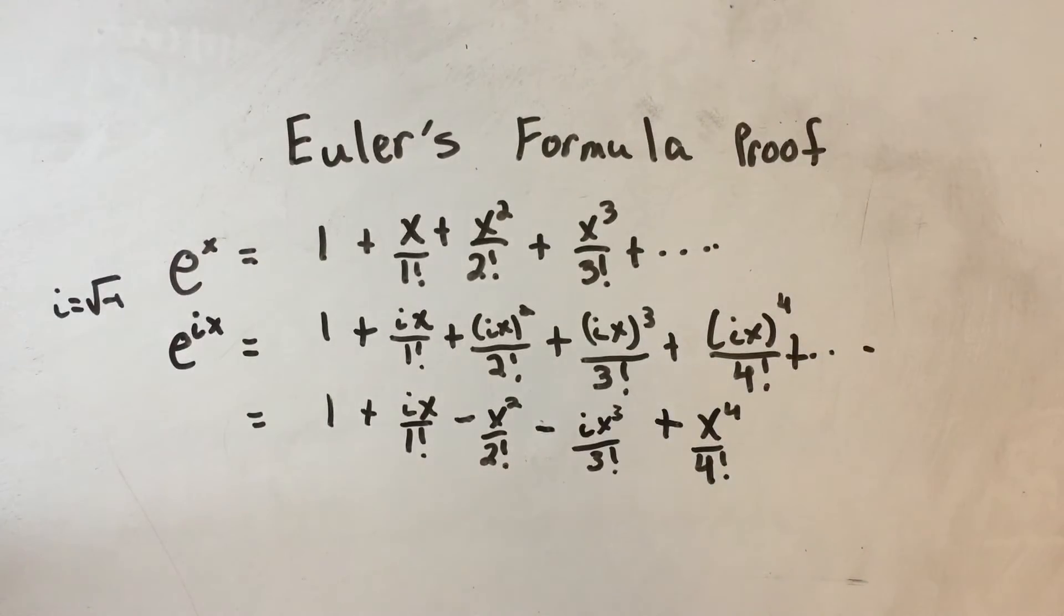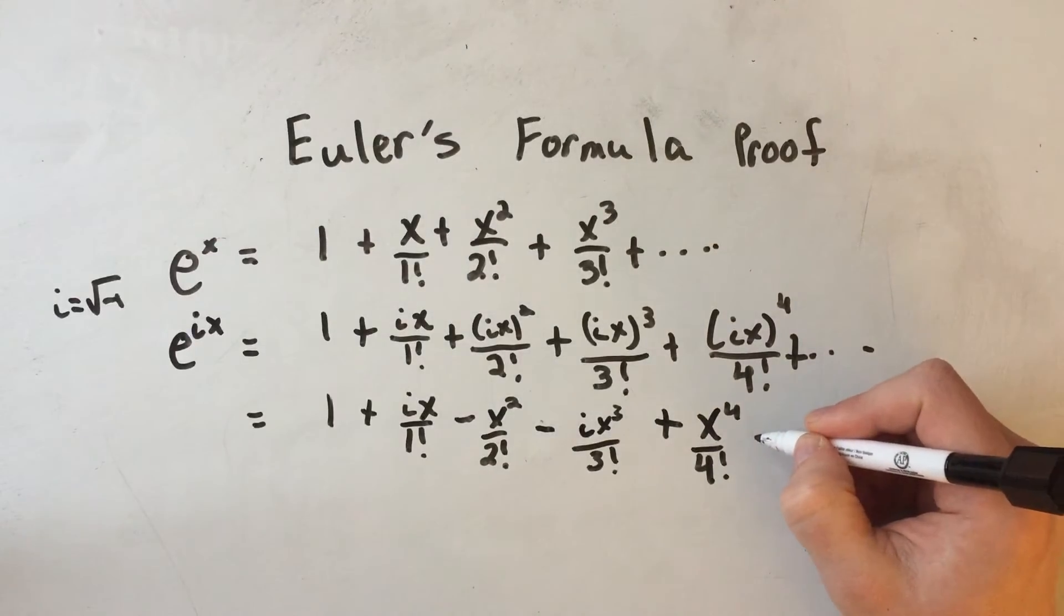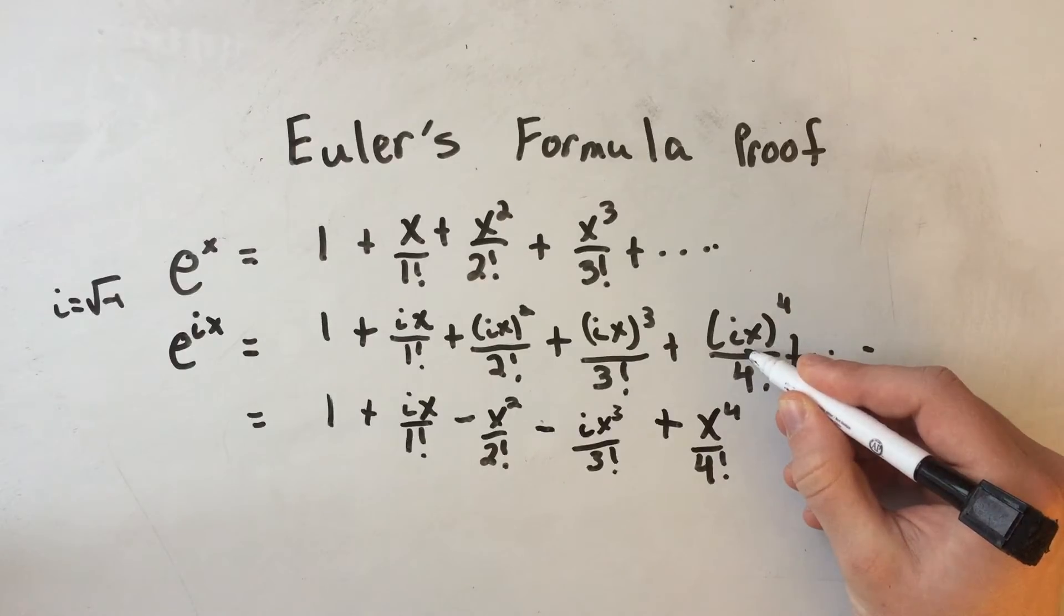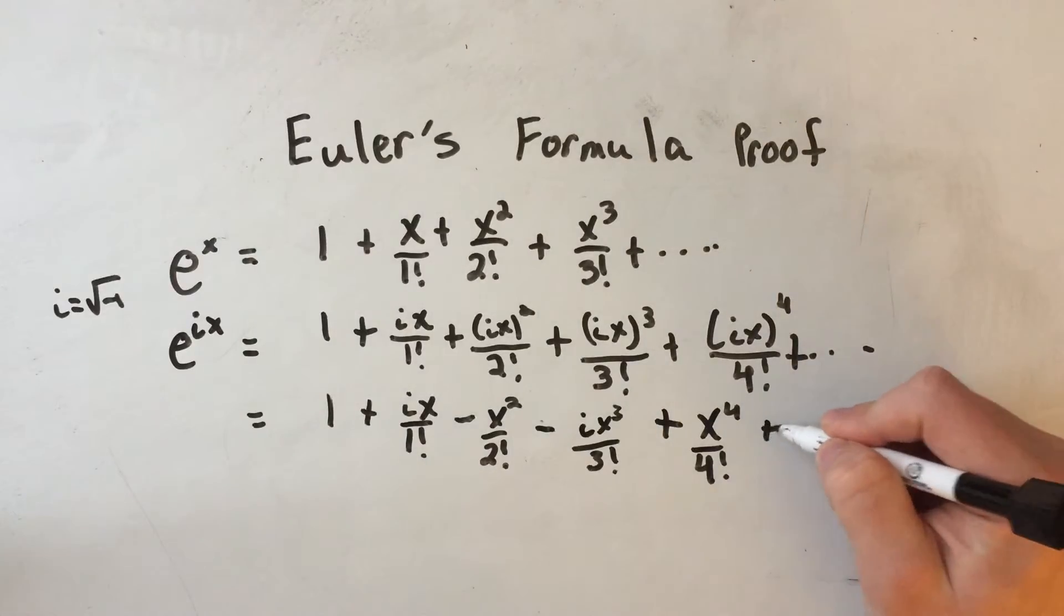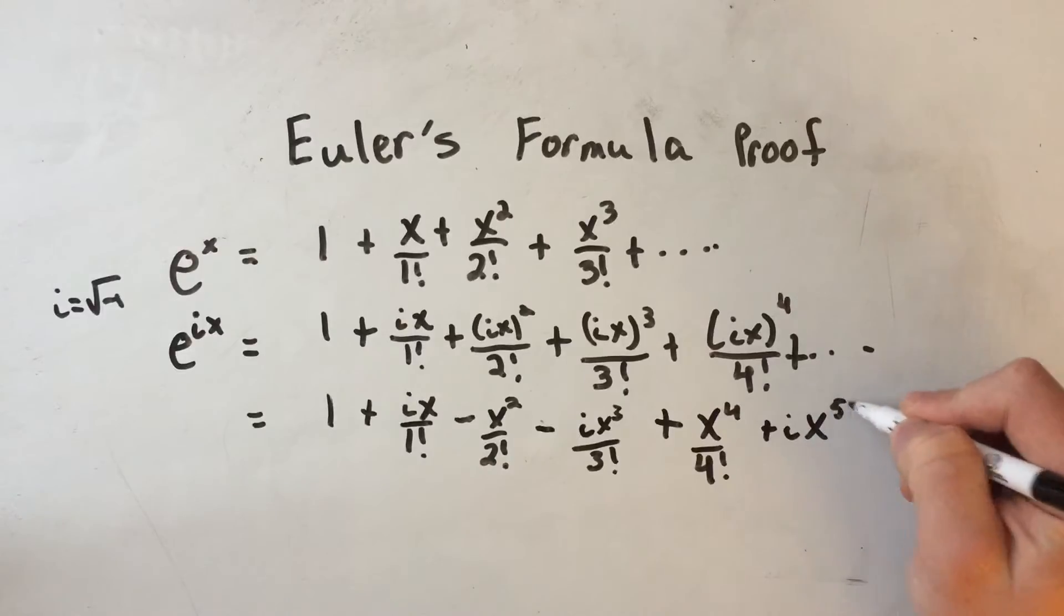And what you could see is you could see that this very pattern I've just written will repeat. The next one is going to be i to the 5th, which is just 1 times i, so that would be plus i times x to the 5th over 5 factorial, and the next one would be negative, and I could do this all day long, but what we want to recognize is the pattern.